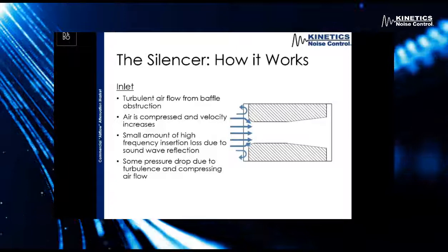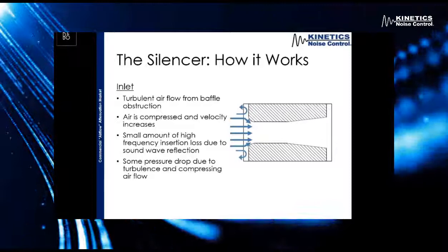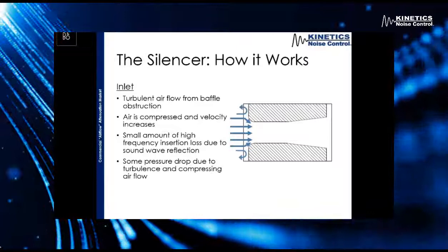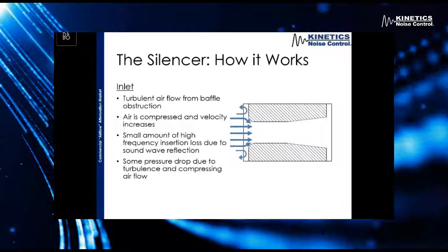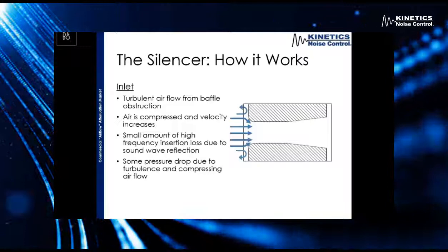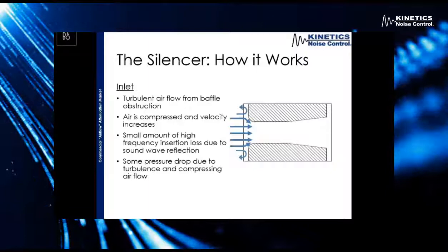There are three stages of how the silencer works, starting with the inlet. This is where we see a lot of turbulent airflow — where the airflow first encounters the silencer. As that air hits the baffle, we get some turbulence. That air is then compressed into the air gap, and the velocity increases as the air is compressed. We'll have a small amount of insertion loss here, specifically in the high frequencies, just due to some sound wave reflection off the baffles. And we get a small amount of pressure drop here due to the turbulence and compression of the airflow.